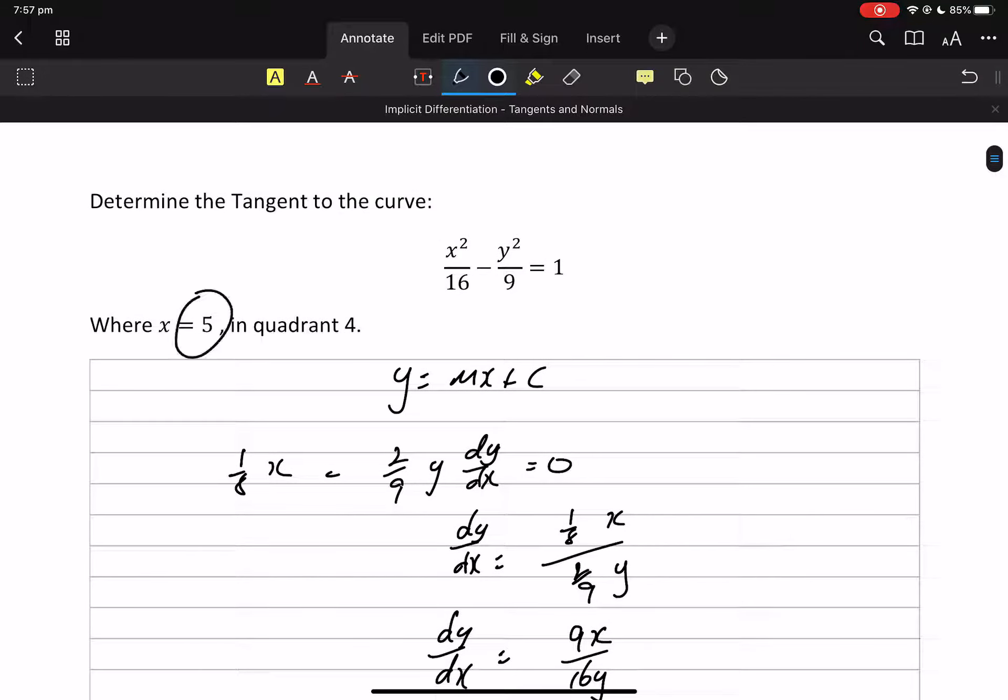So we're going to put that 5 into here. 25 on 16. And we're going to get y equals, okay, so 25 minus 1, multiply by 9, and we're going to get 81. So y squared is 81 on 16.